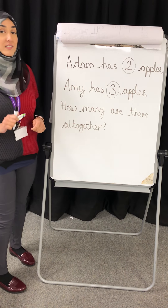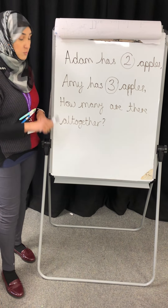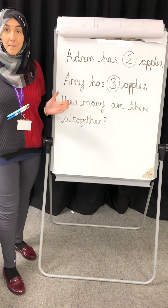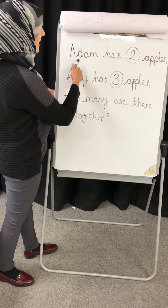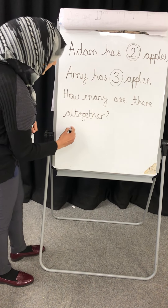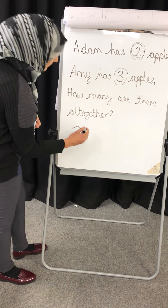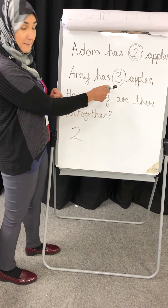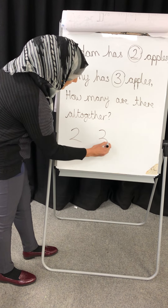Now, there is an easier way to work out this word problem — we could write a number sentence. So let's pick up the important information. Adam has two apples, we'll circle that, so we're going to write number two over here. And then it says Amy has three apples, so we're going to write number three over here.